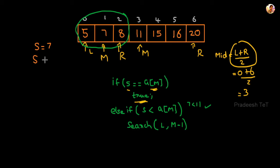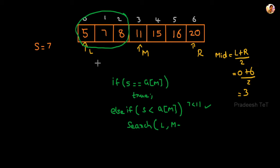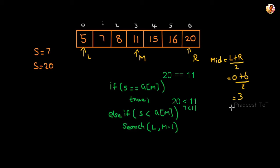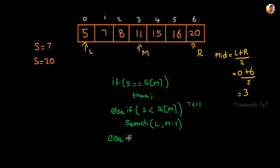We divide the list to find the number, and we can see the number in the second attempt. Now let's search for the number 20. We reset L, R, and M. First condition: S equals A[M], so is 20 equal to 11? No. Else-if: is 20 less than 11? No. Else-if: is 20 greater than 11? Yes, 20 is greater than 11, so the target is on the right side.